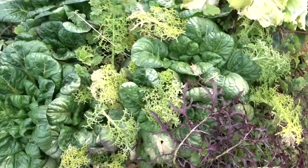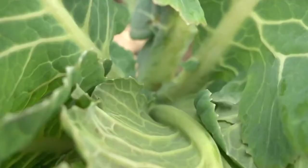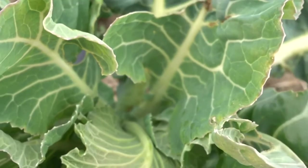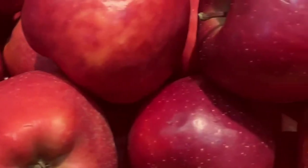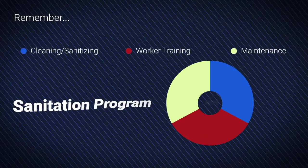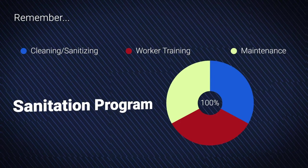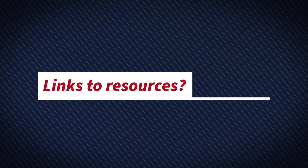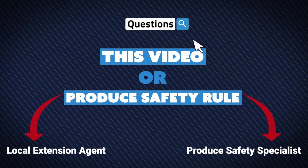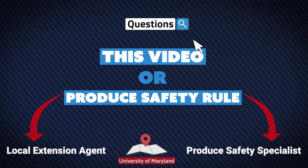Having an efficient and effective cleaning and sanitizing routine for your cold storage area will not only help you minimize food safety risk, but also help extend the shelf life of your produce. Remember, in addition to cleaning and sanitizing routines, worker training and good housekeeping practices can also support your operation sanitation program and extend the life of your cold storage unit. All links provided throughout the video will be included in the description. If you have any questions about this video or the Produce Safety Rule, please contact your local Extension Agent or Produce Safety Specialist at the University of Maryland.